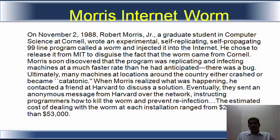On November 2nd, 1988, Robert Morris Junior, a graduate student in computer science at Cornell, wrote an experimental, self-duplicating, self-propagating 99-line program called a worm and injected it into the internet. He chose to release it from MIT to disguise the fact that the worm came from Cornell. Morales soon discovered that the program was replicating and infecting machines at a much faster rate than he had anticipated — there was a bug, so that is why this happened very fast.